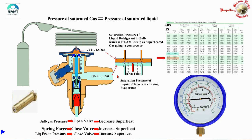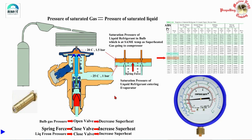If more refrigerant enters the evaporator, it will not have the opportunity to completely convert to gas before the exit, so there is a possibility the refrigerant will still be partly liquid when exiting the evaporator. That is why closing the valve gives a better chance of increasing the superheat. You cannot easily adjust the suction pressure since it is set at minus 25 to keep the meat room at minus 20, but you have the spring, which allows a human to tighten it and adjust the superheat — that is why this is called the superheat adjustment device.